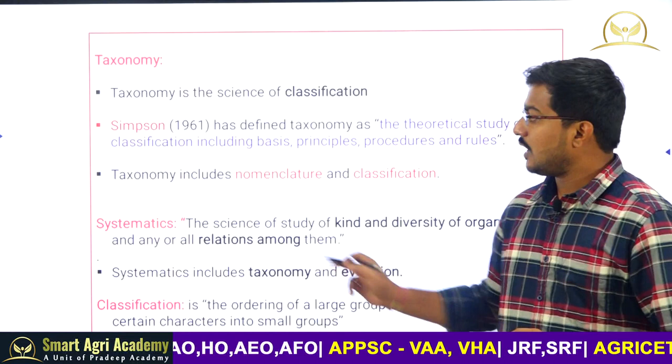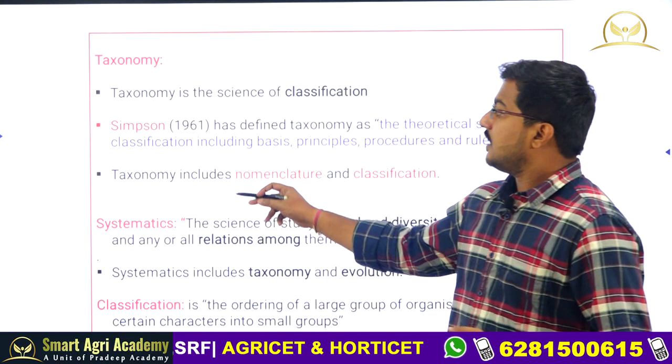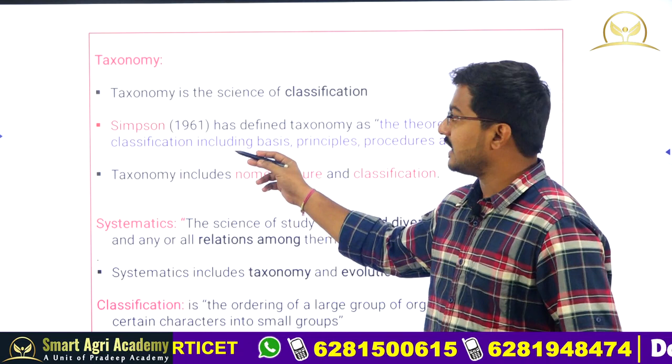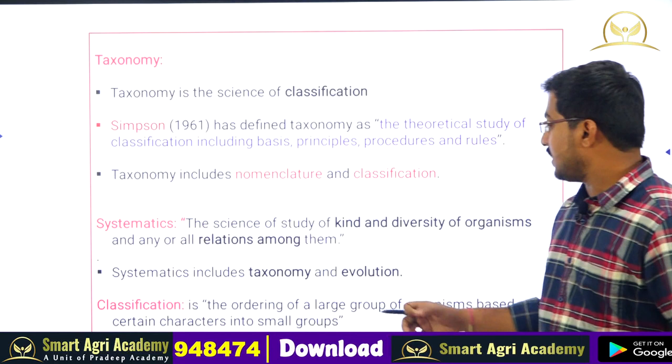Now let us see the definition of systematics. The science of study of kinds and diversity of organisms and any or all the relationships among them is called systematics. It is often confused with taxonomy, so it is essential to know the clear differentiation between the two. Systematics includes taxonomy and evolution, so taxonomy is a part of systematics. Classification is the ordering of large groups of organisms based on certain characteristics into small groups based on similarities.